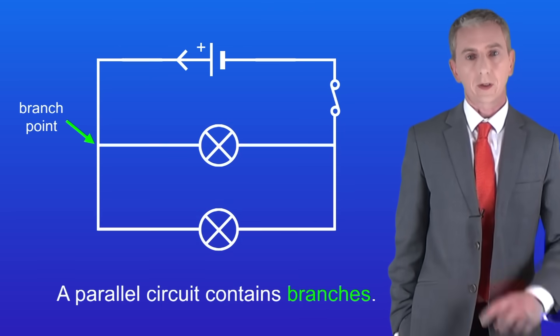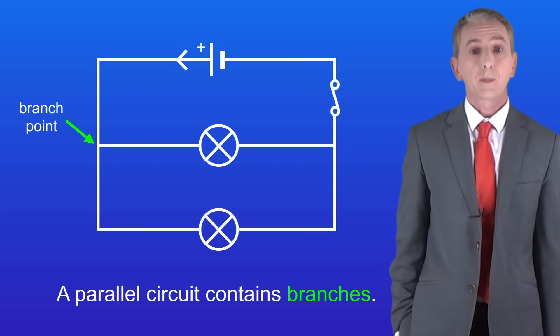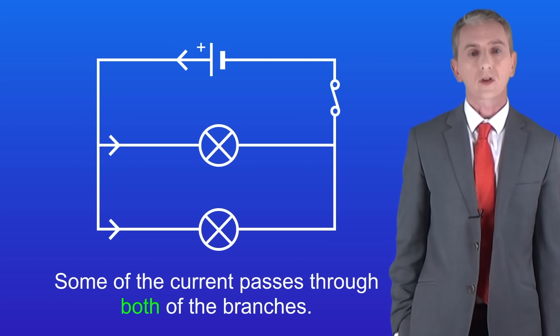I'm showing you a simple parallel circuit here. As you can see a parallel circuit contains branches. Now what this means is that the current splits. Some of the current passes through both of the branches.